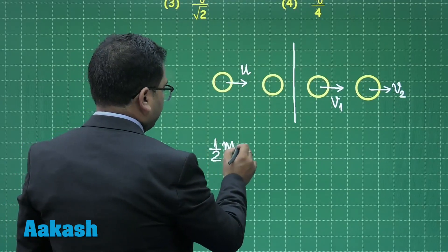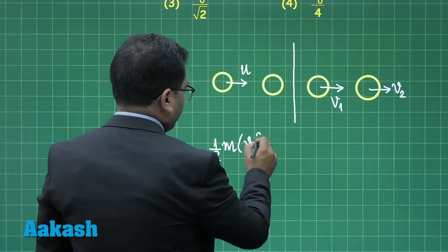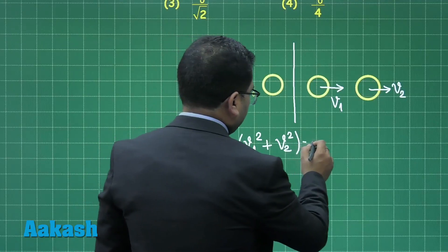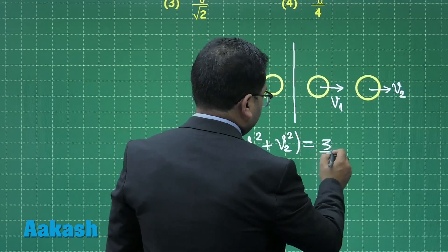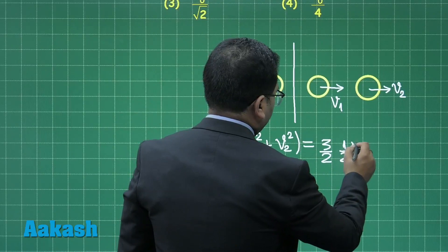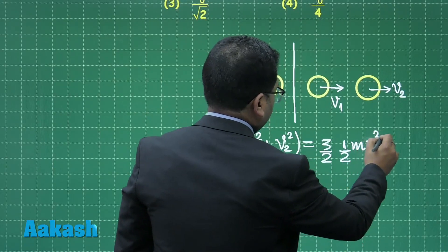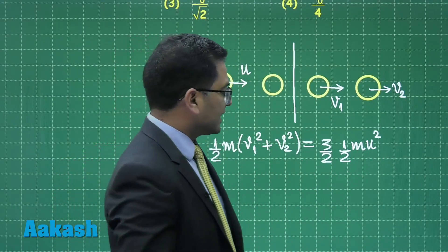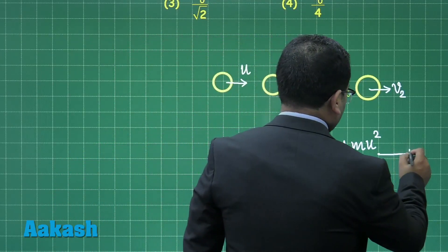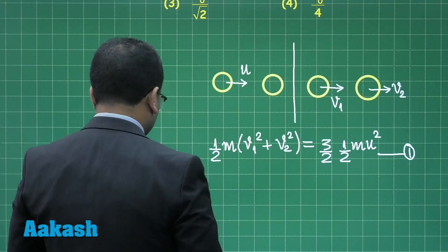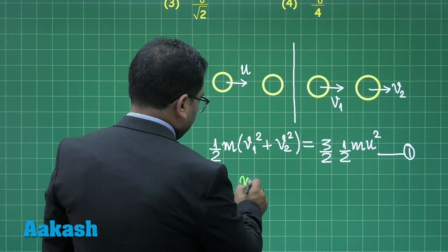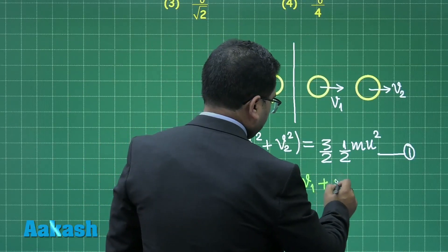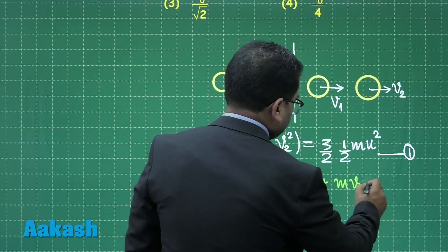Equation 1 (energy): (1/2)m(v1² + v2²) = (3/2) × (1/2)mu², since the final KE is 50% more than the initial. Equation 2 (momentum conservation): mu = mv1 + mv2.